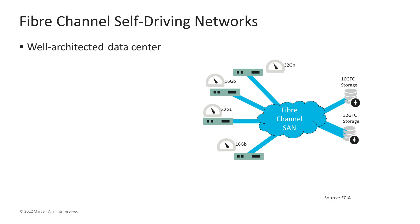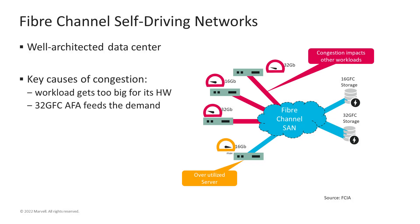In a well-designed SAN, every host has plenty of bandwidth available to access the storage, and I/O commands are free to flow back and forth. In this diagram, we have two servers with 16-gigabit fiber channel HPAs and two with 32-gig fiber channel HPAs, connected to 16-gig and 32-gig fiber channel storage arrays across the SAN. All host servers are balanced and delivering good performance.